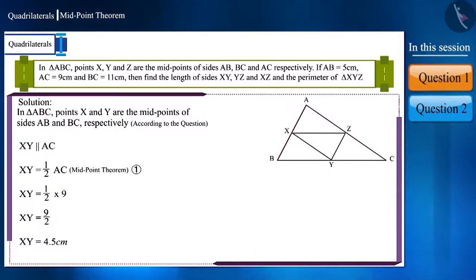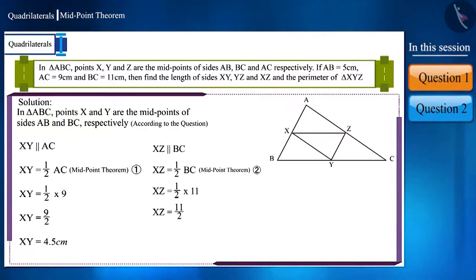Similarly, points X and Z are the midpoints of sides AB and AC respectively. Using the midpoint theorem, we can write it this way. The measurement of BC is 11 cm, from which we can find the measurement of XZ. We will get XZ as 5.5 cm.